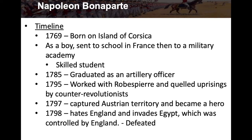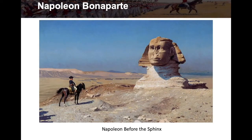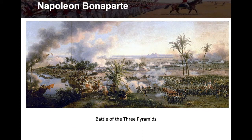He went in and took Austrian territory and gave it to France, so that was pretty good for him and he became a hero. In 1798, hating England, he decided to invade Egypt, which was controlled by England — England had a lot of influence on Egypt and Palestine and the Middle East during this time and for many years to come. But he was defeated in Egypt. Here's Napoleon before the Sphinx at the Battle of the Three Pyramids.